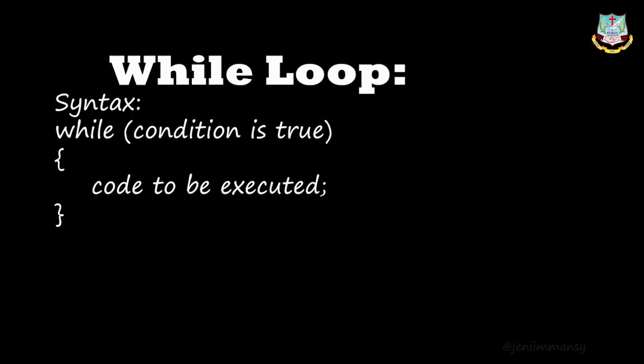Next one is while loop. While loop executes a block of code till the condition specified in the while statement is true. This is similar to other loops like for loop. Here, while with a condition — if the condition is true, the code or statement given below will be executed. If the condition is false, it won't be executed. First, the initialization value will be there, and while will have a condition in the bracket.